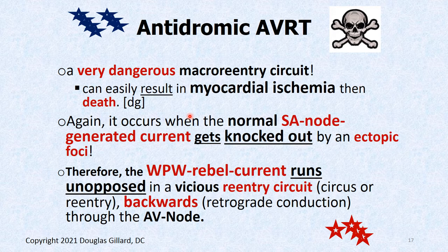Antidromic AVRT is a very dangerous macro-reentry circuit. We looked at micro-reentry with ectopic atrial tachycardia — a dead area of myocardial tissue creating a small loop. This loop is much bigger, so these are called macro-reentry circuits. This one can run fast enough to cause quick myocardial ischemia and death of heart tissue. It occurs when the normal SA node current is knocked out by a perfectly timed and placed ectopic foci — usually in the atria but possibly in the junctional region — leaving the WPW current with nobody to knock it out.